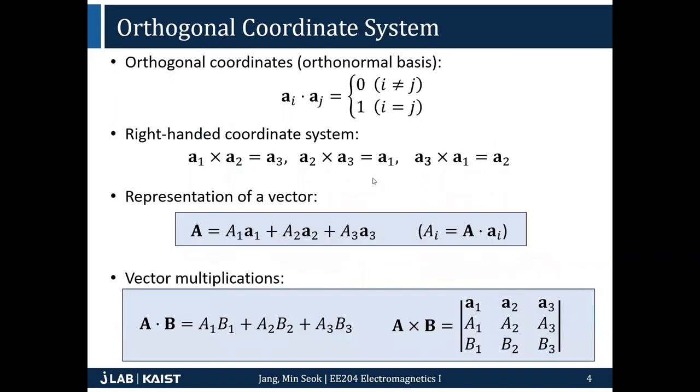To make our discussion simple, we want to just focus on orthogonal coordinate system. What I mean by orthogonal means this property - if you have A1, A2, A3, then Ai·Aj is 0 if i is not equal to j, and Ai·Aj is 1 if they are equal. This is called orthogonal properties or orthonormal basis.